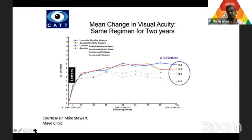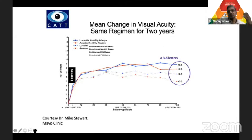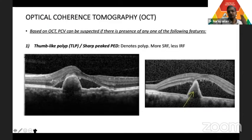The CATT trial shows that patients can be treated with either monthly injection or PRN — monthly visits but no injection when there is no fluid. The average letter gain is about 8.8 letters with Lucentis monthly or 7.8 injections with Avastin monthly. It's not about just seeing fluid or giving an injection; you should be able to tell the patient the likely gain and the number of injections they are likely to receive.